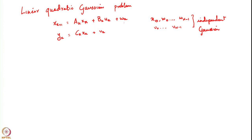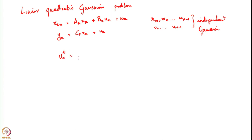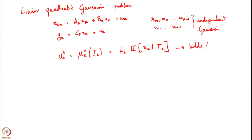With any distribution for the noise — so long as these were zero mean and independent but not necessarily Gaussian — we had found that the optimal control u*k equals mu*k of Ik, which is Lk times the conditional expectation of x_k given I_k. This holds for any noise distribution with zero mean and independence.